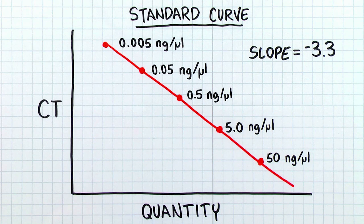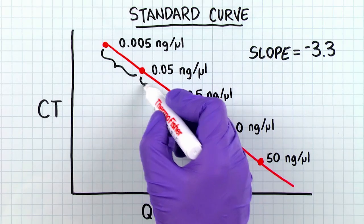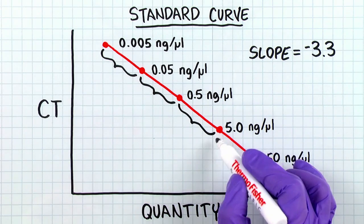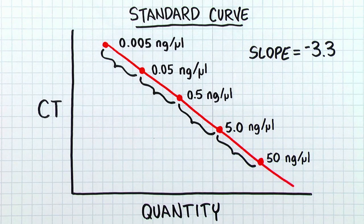Because the standards are 10-fold dilutions, we expect the change in CT from one standard to the next to be uniform. An uneven distribution of CT values might indicate that the dilution series was not accurately pipetted.